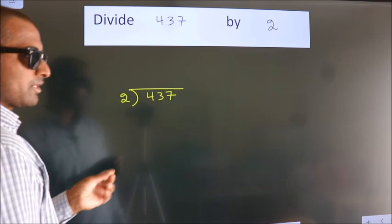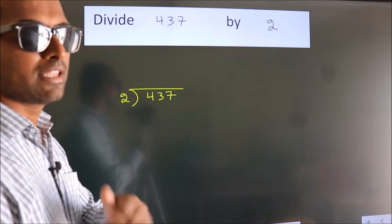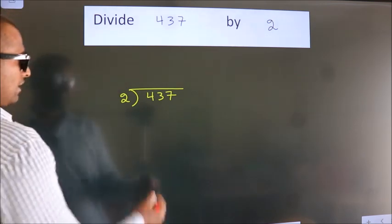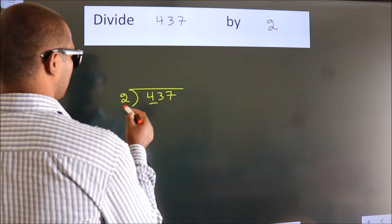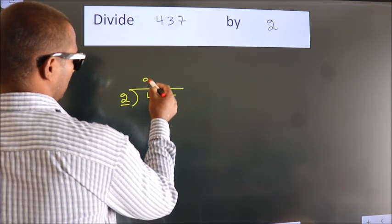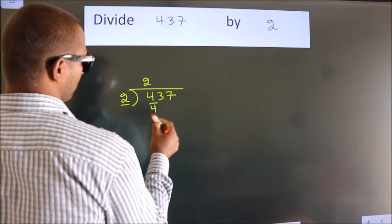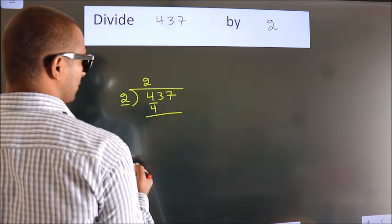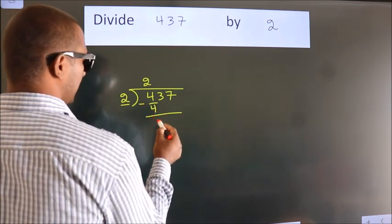This is your step 1. Next. Here we have 4, here 2. When do we get 4 in 2 table? 2 2's, 4. Now, we should subtract. We get 0.